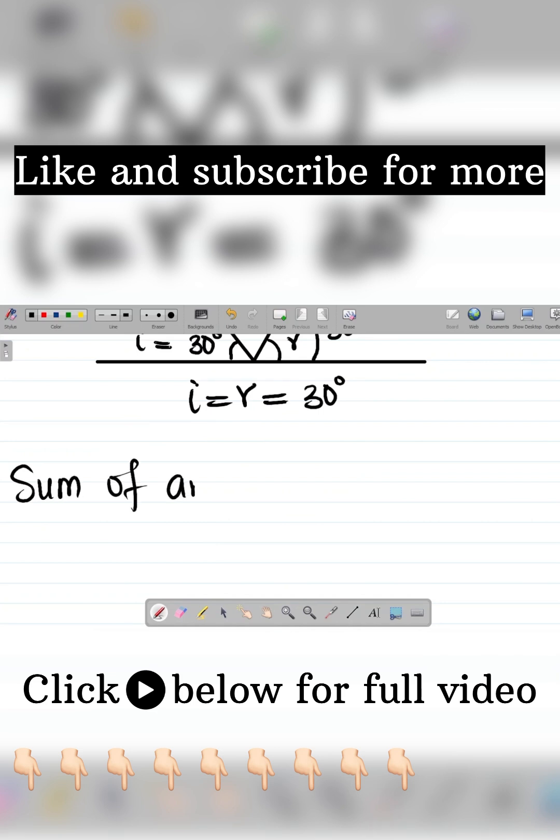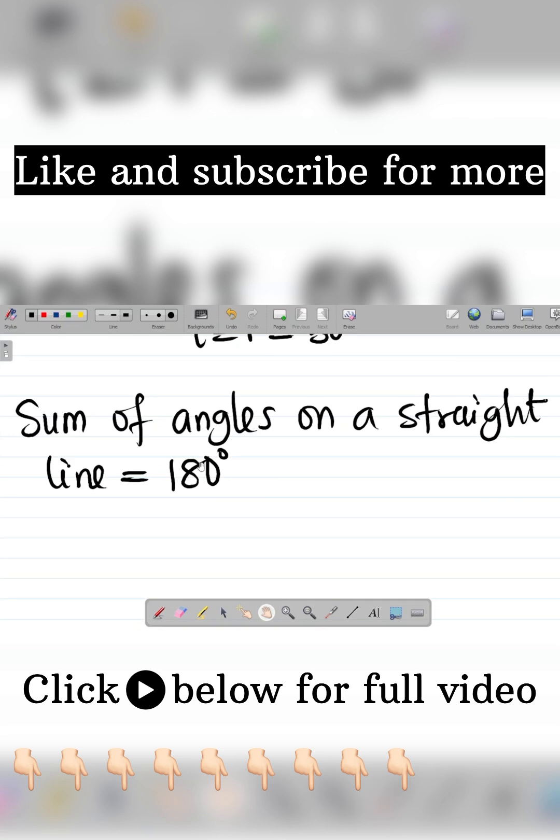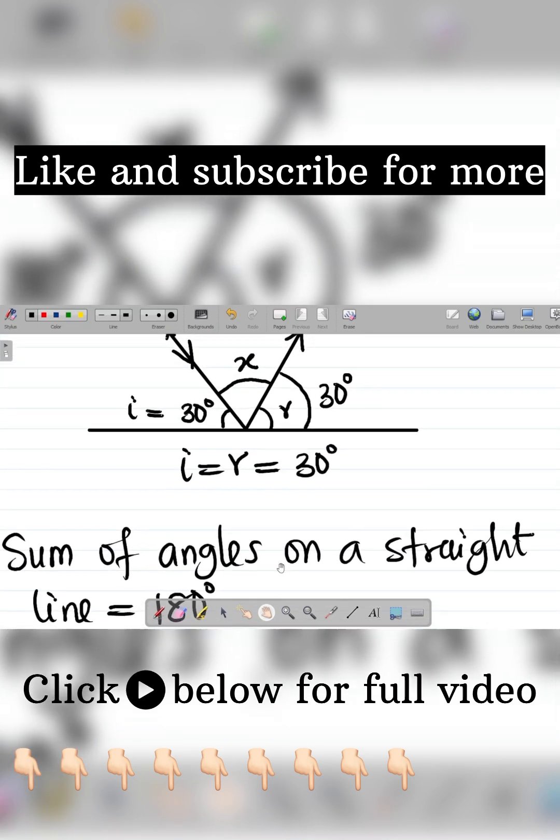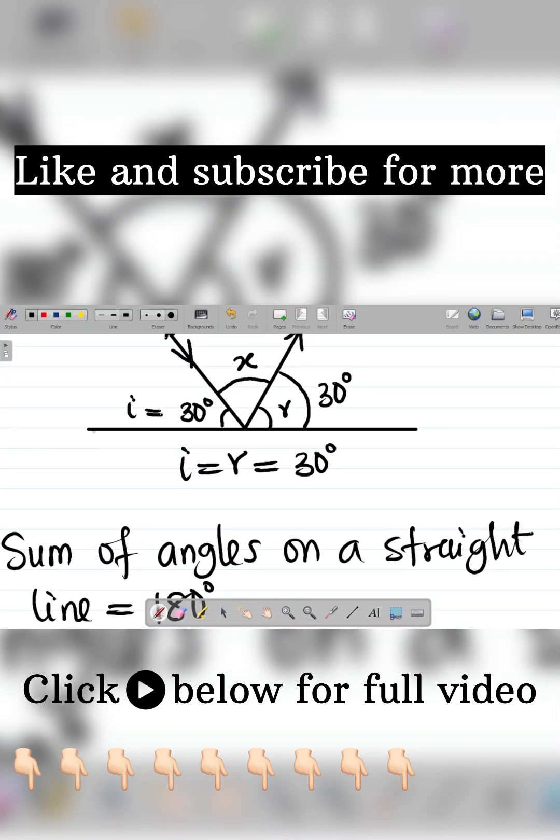The sum of angles on a straight line is equal to 180 degrees. This is a mathematical concept. The straight line we're considering is this line here.